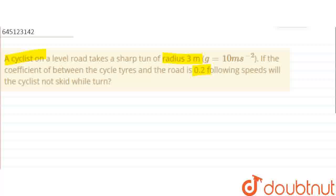The question asks: at what speed will the cyclist not skid while turning? The cyclist takes the turn with radius r equal to 3 meters.